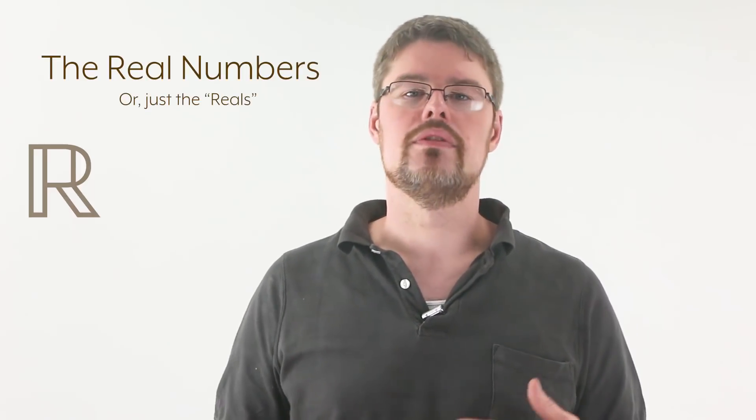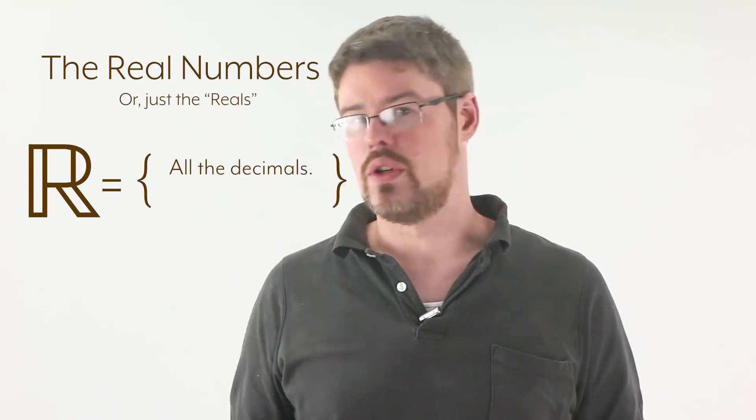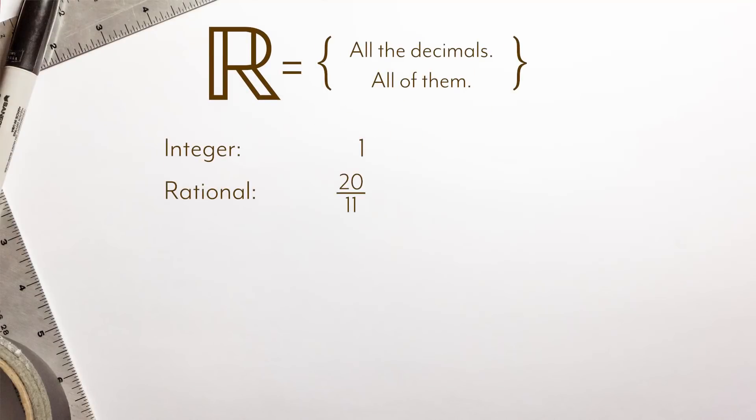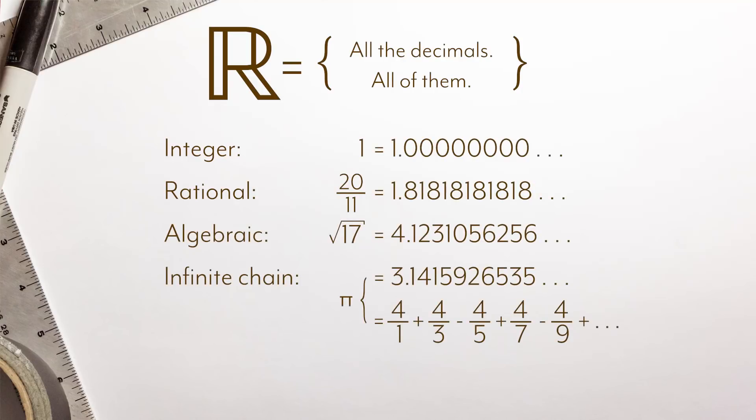The set of reals we will define informally, every decimal you could ever build. This can come from integers or rationals, which give nice easy-to-understand decimals, or like the algebraic set, potentially combining infinite numbers of integers and operations, but without any imaginary numbers allowed in.